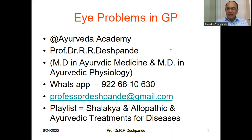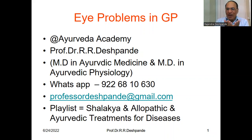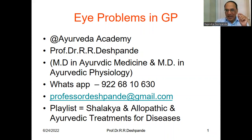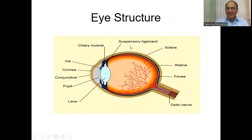Today we are going to see two important diseases in a very small and easy-to-understand manner. We are going to discuss about eye problems — that is Stye and Chalazion. Let us start with eye problems and structure.